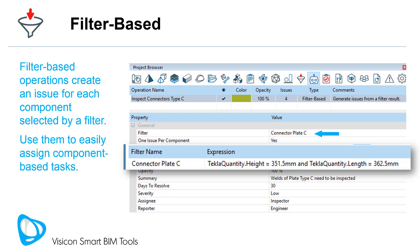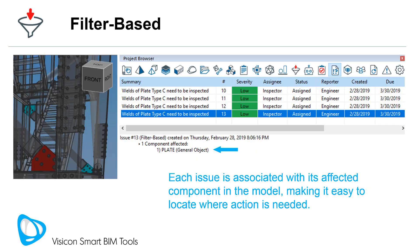The assigned filter is set to select plates with TeclaQuantity.Height equal to 351.5 mm and TeclaQuantity.Length equal to 365.5 mm. Running the operation identifies four plates that meet the filter's requirements and creates an issue for each case. Each issue is associated with its affected component in the model, making it easy to locate where action is needed.